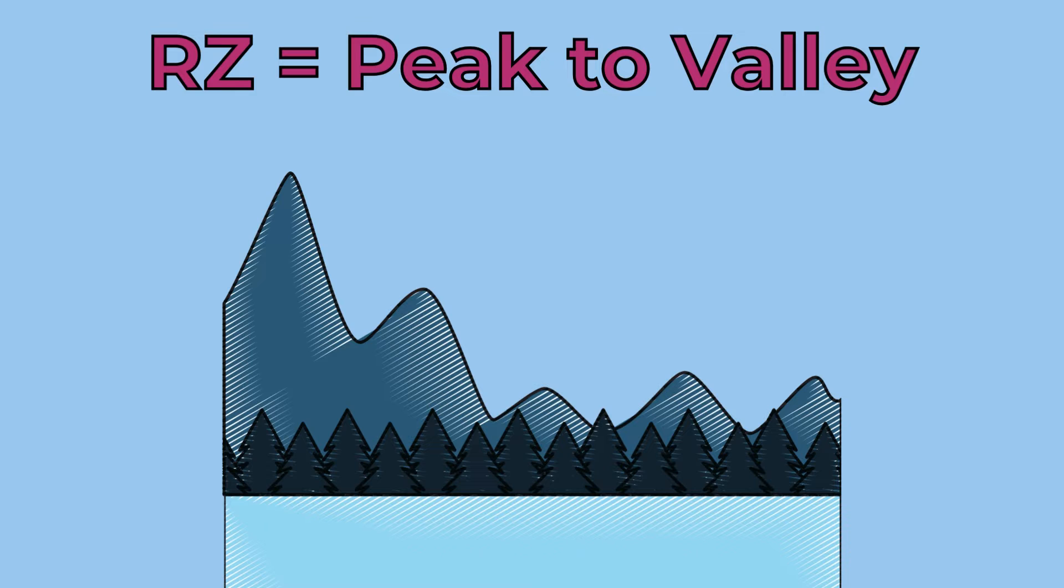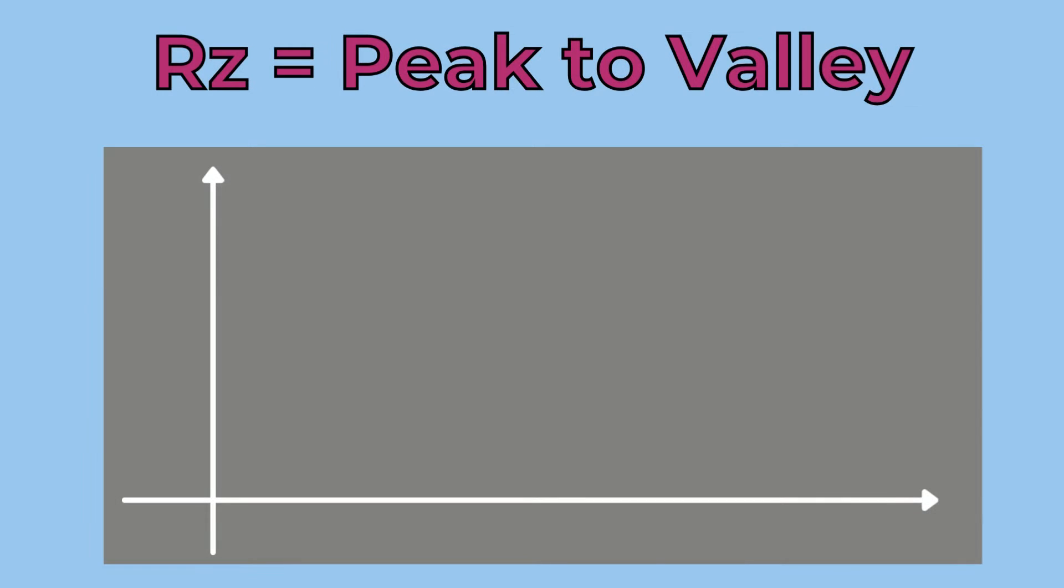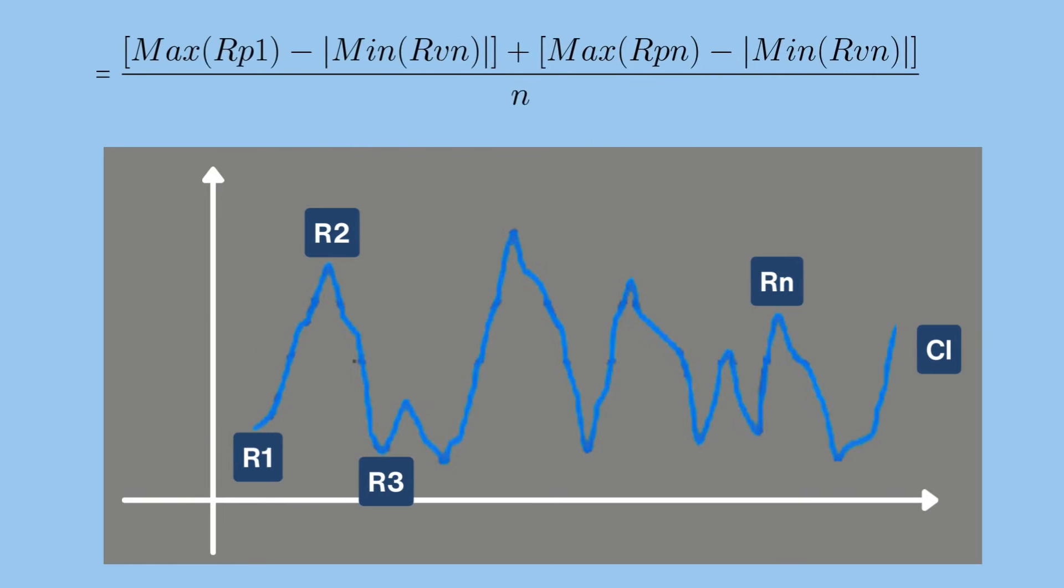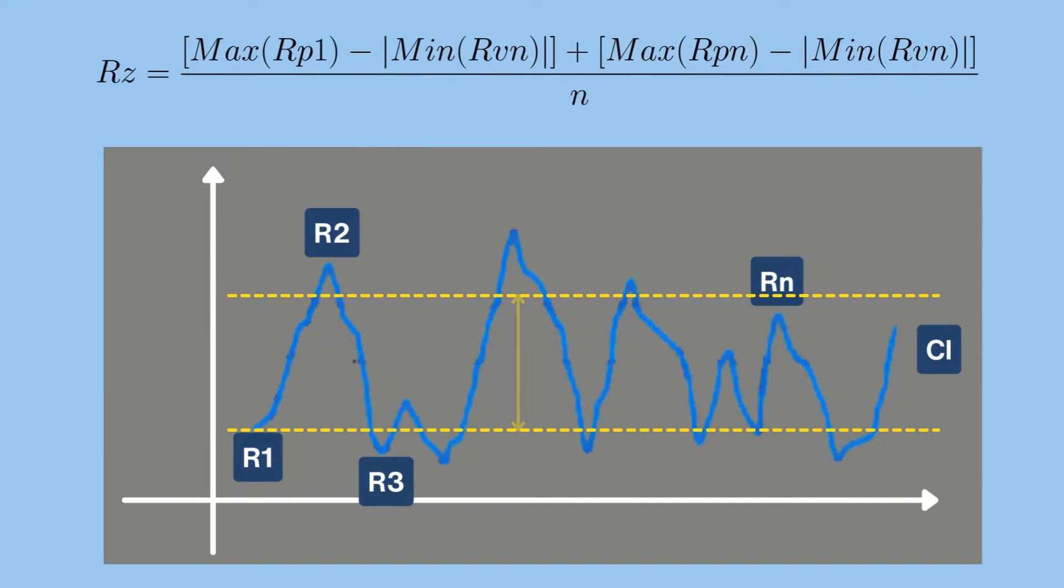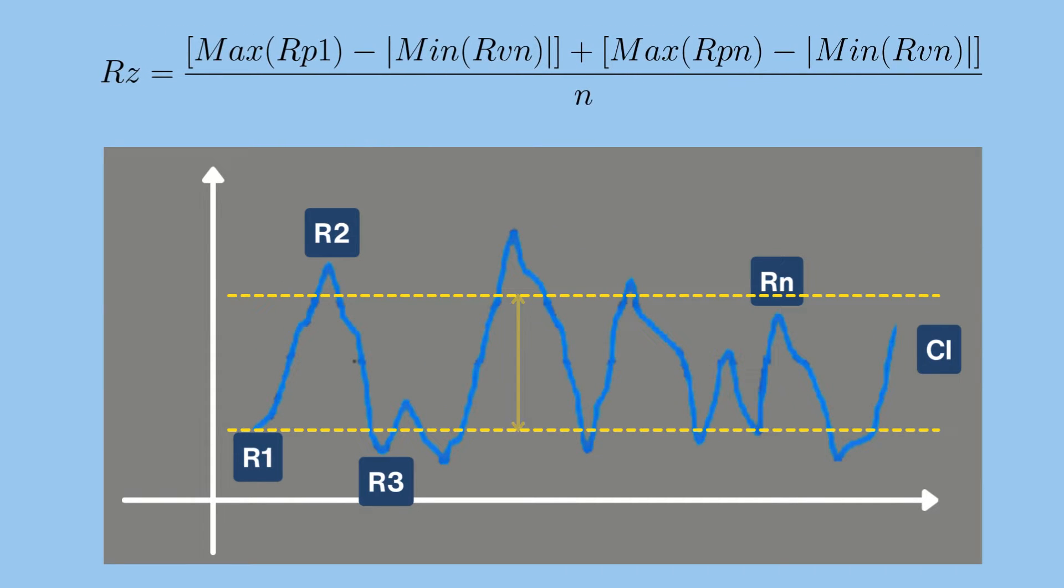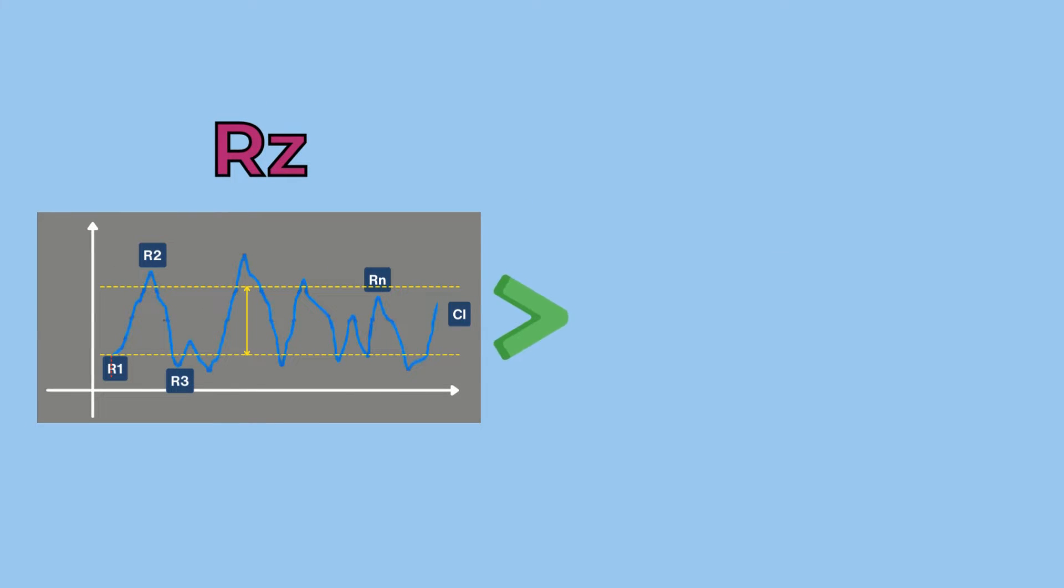On the other hand, RZ is the peak-to-valley average. It is the second most commonly used unit for measuring surface finish. RZ is calculated by measuring the vertical distance from the highest peak to the lowest valley within the scan profile. The highest five peaks and the five deepest valleys are averaged. Therefore, RZ will always yield a higher value than RA.